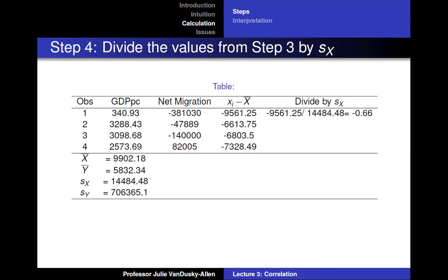Then you divide the values from step 3 by the standard deviation of x. Negative 9561.25 divided by 14484.48 equals negative 0.66. You do this for the rest of the observations.